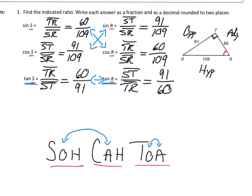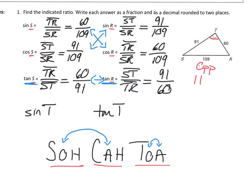You might expect the problem to continue and figure out the sine or tangent of angle T. Well, the problem is if I go to focus on angle T, the side across from angle T is the opposite side, but that side is also the hypotenuse. So we end up with a contradiction — I can't use the right angle because then I either don't have a hypotenuse or I don't have an opposite side. So you're always going to focus on one of the other angles besides the right angle.